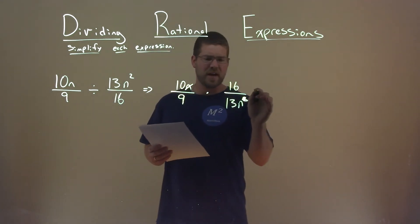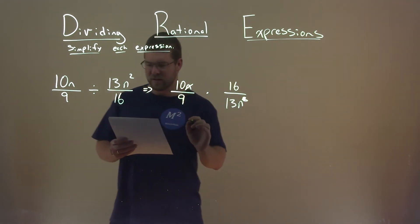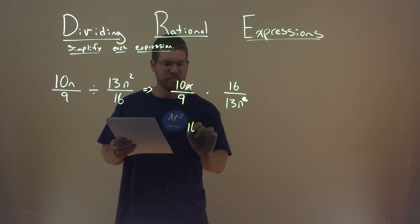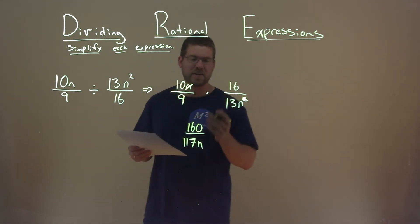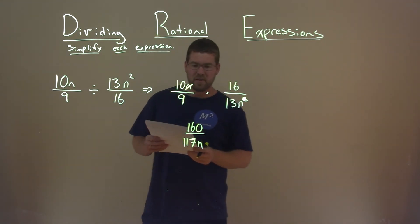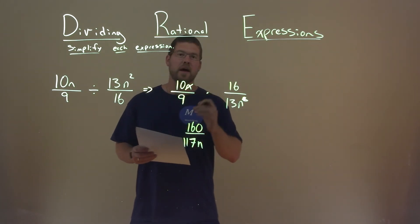And so now we just have to multiply across the numerator, which is 10 times 16 is 160. And the denominator, 9 times 13, is 117. And don't forget the n. And that's actually it. Our final answer is 160 over 117n.